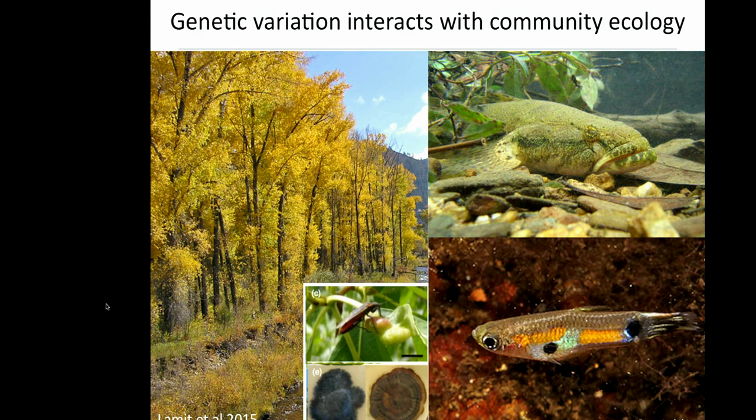Conversely, there are lots of great examples of ways that community ecology shapes the genetic structure within a population. One of my favorite examples is the work by David Reznick, in which he showed that the life history strategies of guppies are strongly shaped by the presence of predators in their environment, within their community. So we know that genetic variation interacts with community structure.